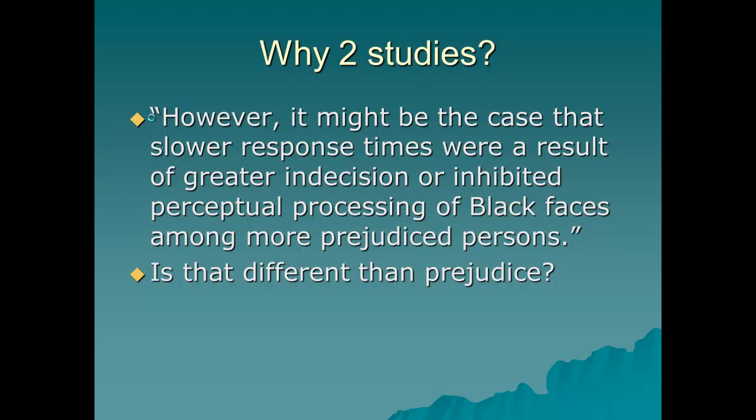Why did they do two studies? They explain this at the beginning of the section for Study 2 by saying that it might be the case that slower response times were a result of greater indecision or inhibited perceptual processes of black faces among people of greater prejudice.